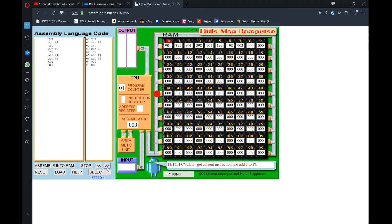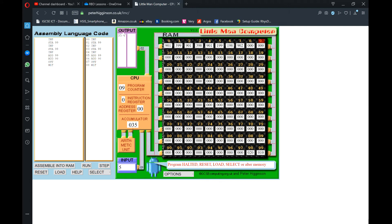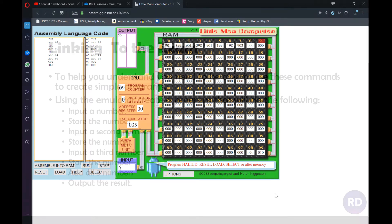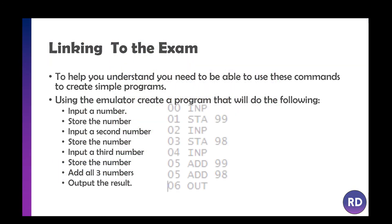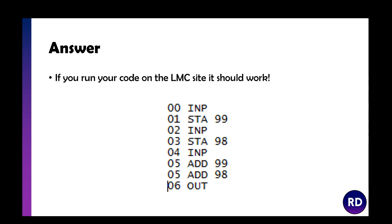Running the full program again with 10, 20, and 5: you see 35 in the accumulator and it outputs 35 — the program works correctly. The solution is: input and store the first number, input and store the second, input the third, add it to the first stored value, then add the second, and output. You don't need to store or load all of them explicitly. One thing I should have added is a HLT at the end, though an empty mailbox contains 00 anyway so the program will stop regardless.